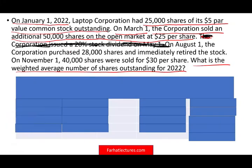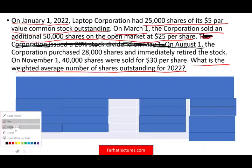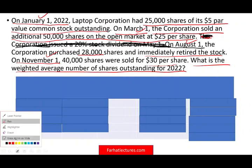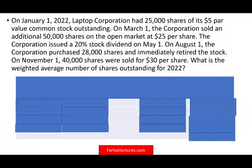On August 1st — so from March to August — the corporation purchased back 28,000 shares and immediately retired the stock. On November 1st, 40,000 shares were sold for $30,000. So basically we have four different events: January 1st, March 1st, August 1st, and November 1st. Let me clear the board so we can set up the table cleanly, keeping the stock dividend out for now.